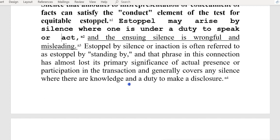Estoppel may arise by silence where one is under a duty to speak or act. All these people that are ignoring you — the administrative process — everything I've read says this is the way to go because they do not have a claim. Estoppel may arise by silence where one is under a duty to speak or act and the ensuing silence is wrongful and misleading. Does that sound like child support or what?